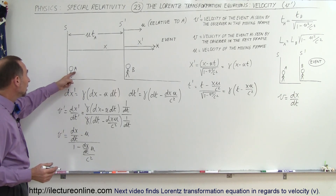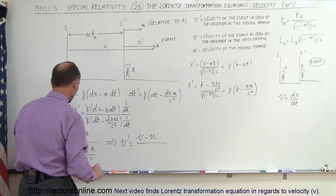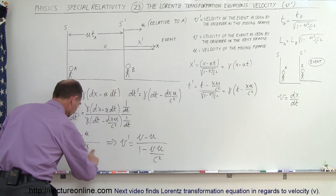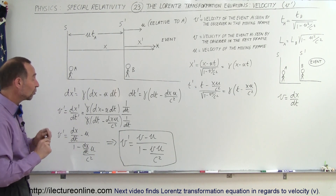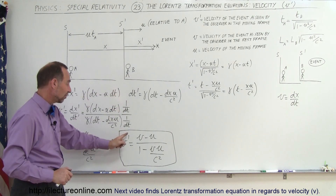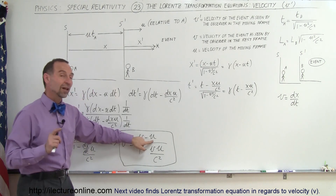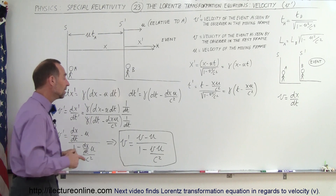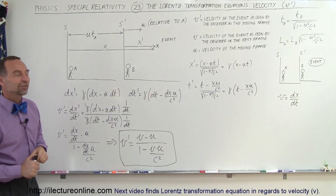DX/DT is simply the velocity relative to the stationary reference frame, so from here we can write that V' is equal to V minus U divided by 1 minus VU over C squared. That is the first of the three velocity transformation equations: the velocity of the event as seen by the observer in the moving reference frame equals the velocity in the stationary frame minus the velocity of the moving frame relative to the stationary frame, divided by 1 minus VU over C squared. That's how it is done.